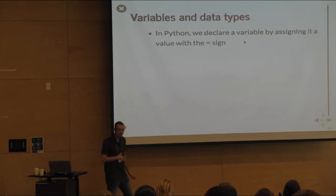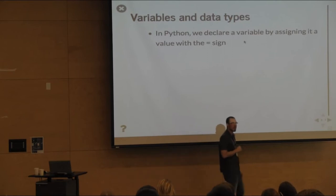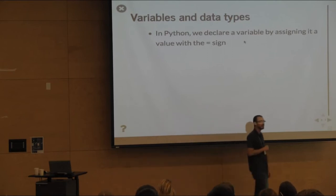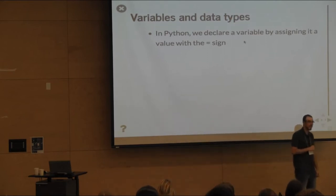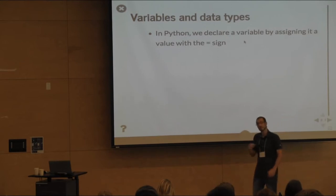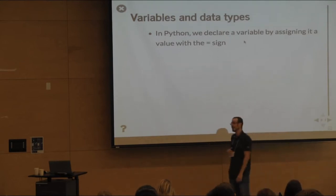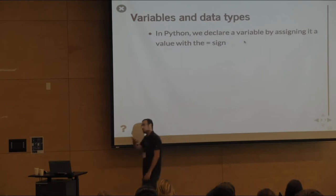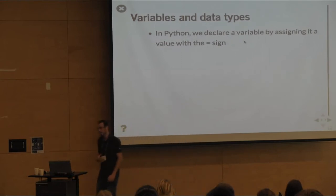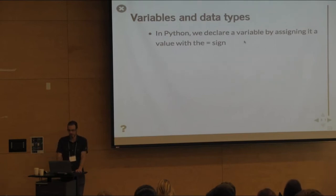In Python, we declare a variable by assigning it a value with the equal sign. How many people know R? In Python you use the equals sign — not the arrow operator as in R. Python supports a variety of data types. All of these will hopefully look familiar because they exist in pretty much every language.